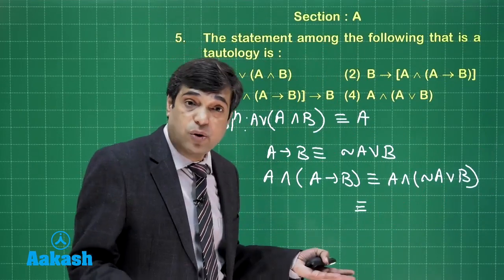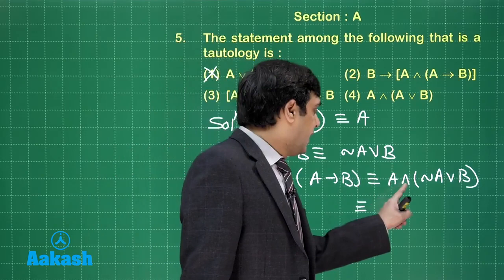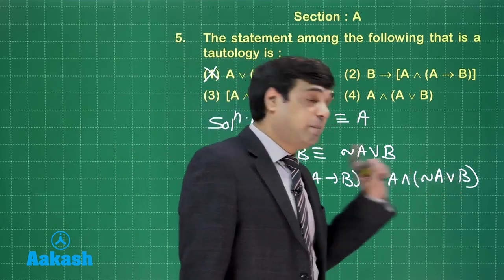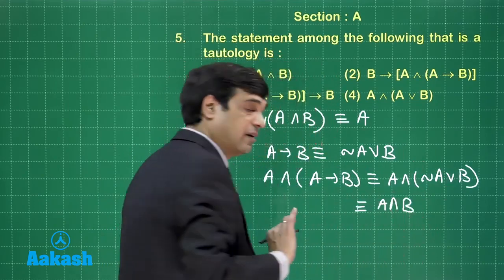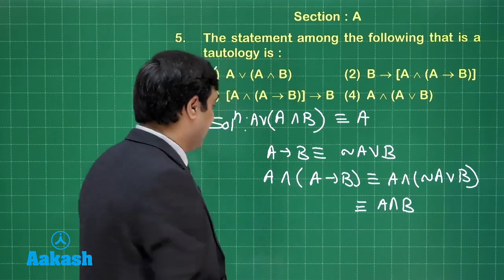Then A and B it is ORing. So simply it is A and B.